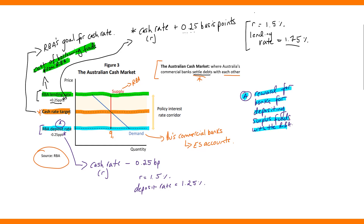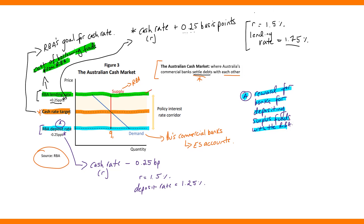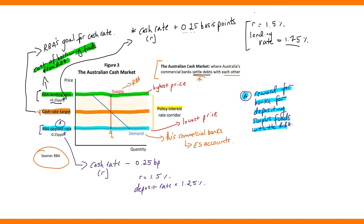Putting this all together: the lending rate is the highest price in the market, and the deposit rate is the lowest price. These two dotted lines create a space between them — this distance between the highest and lowest price is called the RBA's policy interest rate corridor. This is the area in which monetary policy actually occurs, between the green line above and the blue line below.